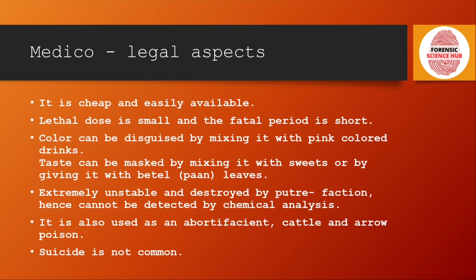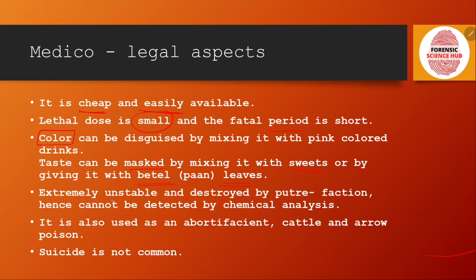Regarding medico-legal aspects: Aconite is a cheap and readily available plant. The lethal dose is small — in milligrams — and the fatal period is short at 2 to 6 hours. Being colorless, it can easily be mixed in any drink without detection. The taste can be masked by mixing it with something sweet or with betel leaves. It is extremely unstable and is destroyed by putrefaction; hence, it cannot be detected by chemical analysis. It is also used as an abortifacient. Suicide using Aconite is not commonly seen.